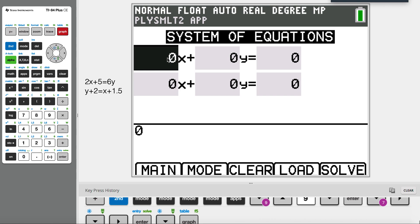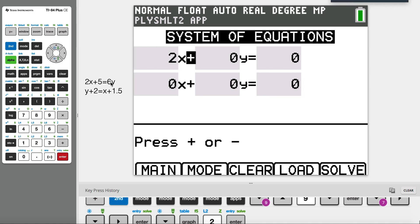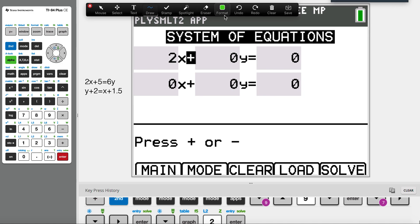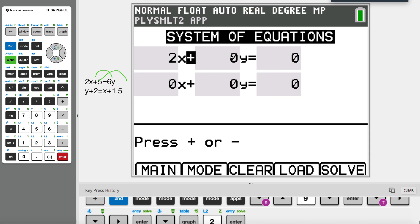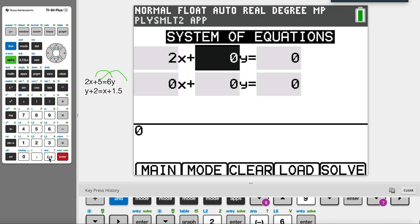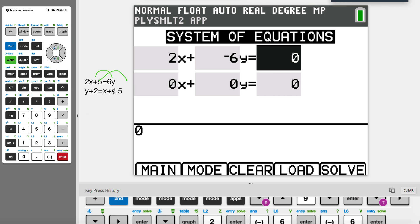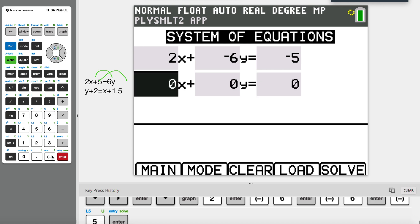So our first equation is pretty straightforward—we have 2x and y. Since xy are on one side, I have to move this 6y onto this side. It's pretty easy. I have to move 6 here and my 5 here. So my y now becomes negative 6. Remember, negative sign is different from the subtract sign. I do negative 6, and my number now becomes negative 5 because I've been moving it to the right side, so I'll just input negative 5. So here's our first equation.